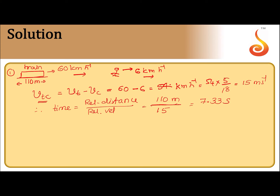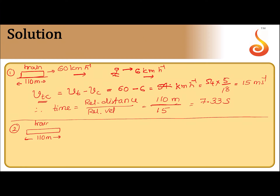Now let us take up the second case. Same train, 110 meters long, moving along this direction at 60 kilometers per hour. But this time the cyclist is moving in the opposite direction at the same speed — 6 kilometers per hour. So the relative velocity of the train with respect to the cyclist is V_t minus V_c. V_t is 60 towards the right, so it is positive. The velocity of the cyclist V_c is minus 6 this time, because he is moving in the opposite direction.